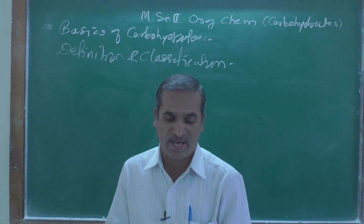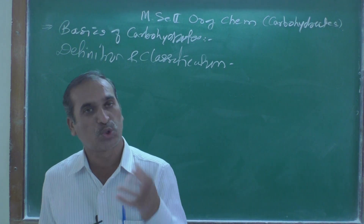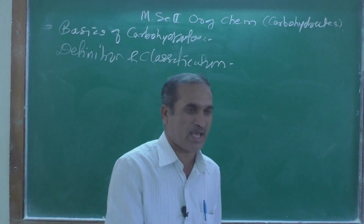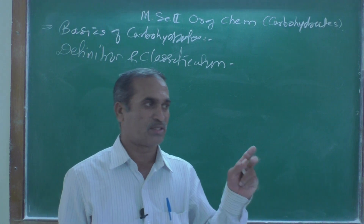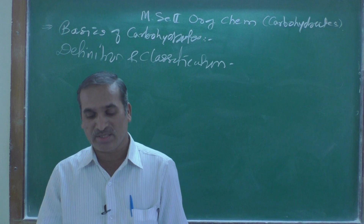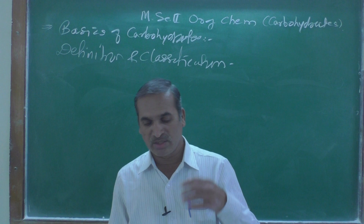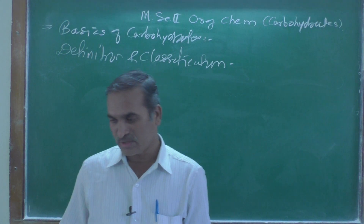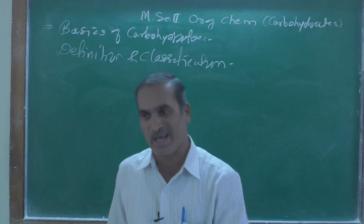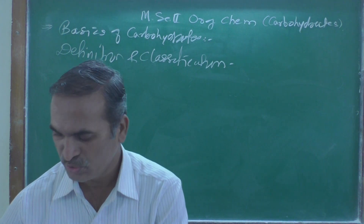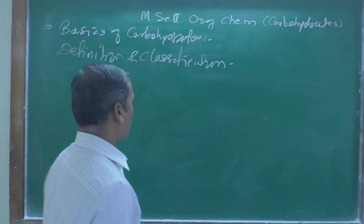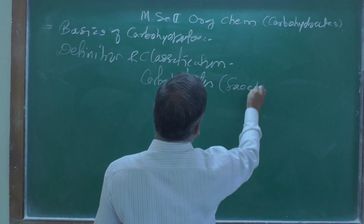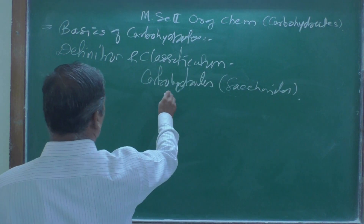Monosaccharides do not hydrolyze further into smaller units of polyhydroxy aldehyde or ketone. Oligosaccharides on hydrolysis yield two to ten units of monosaccharide; they are further classified as disaccharides, trisaccharides, and so on. Polysaccharides give a very large number of monosaccharide units on complete hydrolysis. 'Saccharide' means sugar unit.